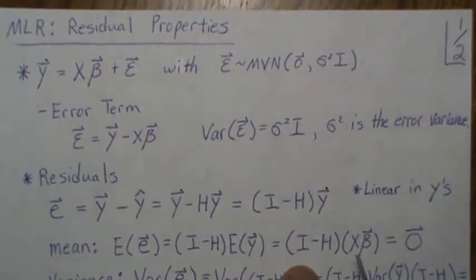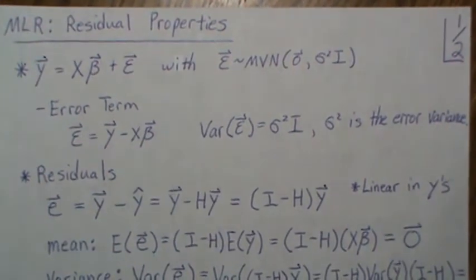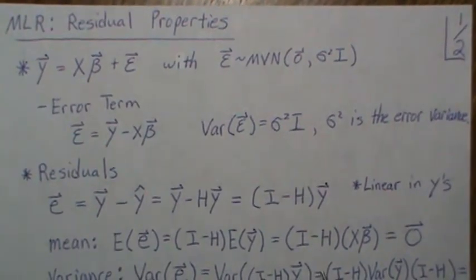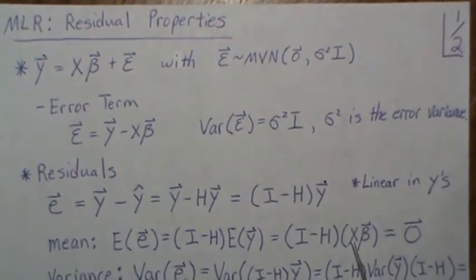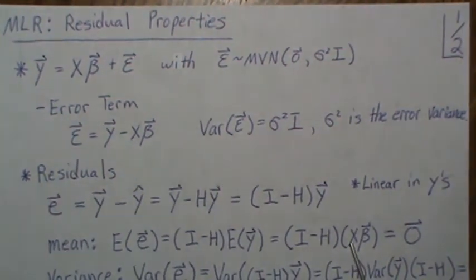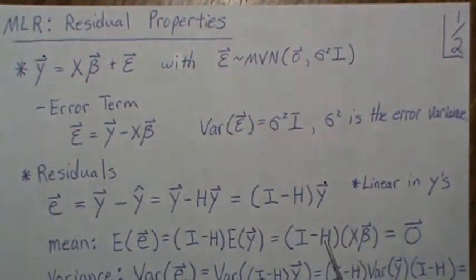The hat matrix times X is X, and I times X is X, and X minus X is zero. Or you could think of that I minus H as a perpendicular projection matrix onto the orthogonal complement space of the column space of X. And X is clearly in the column space of X, so when you pre-multiply it by this perpendicular projection matrix it puts everything to zero.